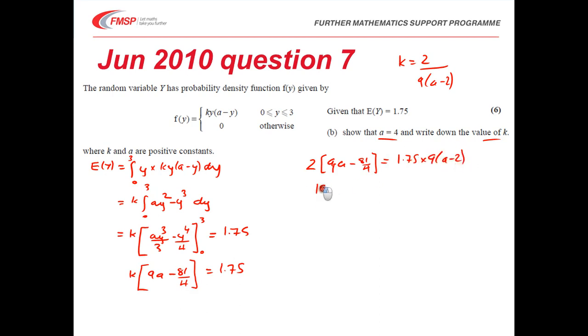That's going to give me 18a minus 81 over 2 equals 15.75a minus 2. A little bit of rearranging now is going to show me that 2.25a equals minus 31.5 plus 81 over 2. And we can solve that equation to show that a equals 4.